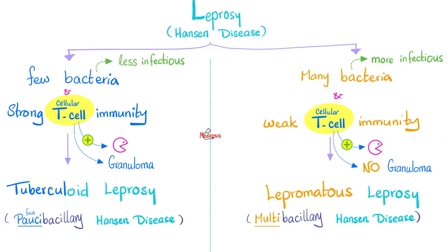Tuberculoid leprosy versus lepromatous leprosy. Tuberculoid leprosy: few bacteria, but strong T lymphocyte immunity. Since it's few bacteria, less infectious. Versus lepromatous leprosy: many bacteria, more infectious.